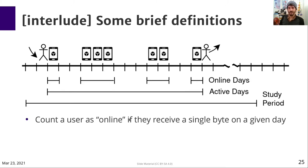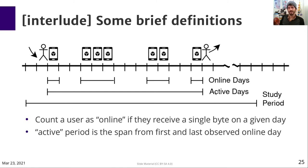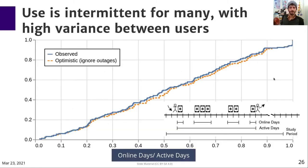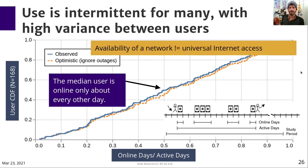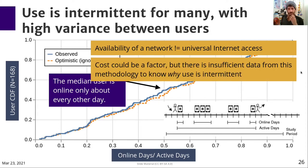We define an online day as a day where a user receives a single byte, and the active period as the span between the first and last observed online day for a given user. Plotting the ratio of online days to active period across all users, we see that use is intermittent for many, with high variance between users — the CDF is almost a straight line. Importantly, the median user is online only about every other day. The takeaway is that the coverage and availability of a network connection is not equivalent to universal access to the internet. Cost could definitely be a factor in the intermittent use, but there's insufficient data from this methodology to know specifically why, and we're hoping to explore this more in future work.